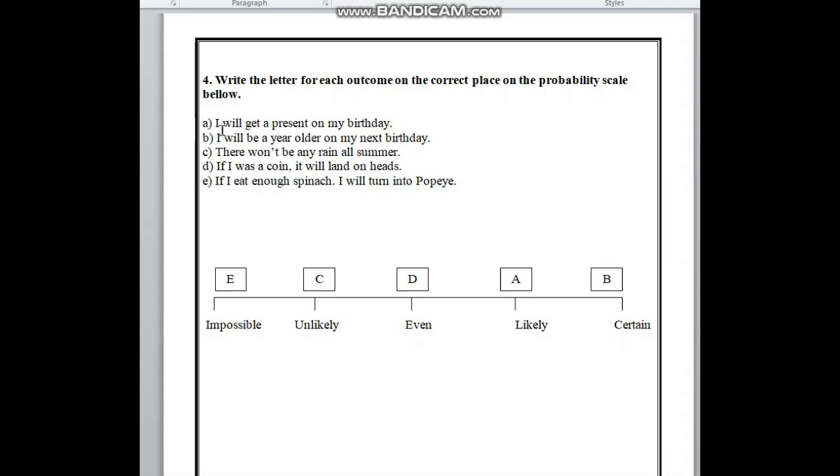Number A, here I will get a present on my birthday. Here is likely because I will get a present on my birthday. Here is more than chances, even. And more than chances of even will be likely and less than chances of even, it will be unlikely. So, before likely, in this box here, we have to write A.